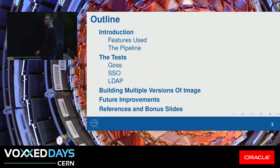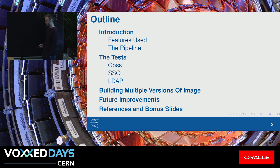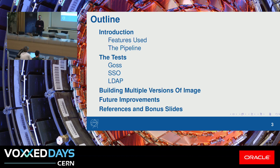In my talk, I want to go through how I test the image in GitLab CI. I'll start with an overview of the features I use, and then go through three of the tests specifically, and then how you can use GitLab CI to build multiple versions of the same image, and then end with how I hope to improve this process in the future. I realized I want to say way more than I can say in 15 minutes, so there are some bonus slides at the end if you're really interested, that show some more specific examples.